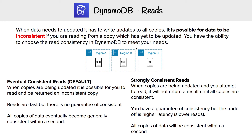Consistency is a very important concept when dealing with DynamoDB. When data is written to the database, it has to copy it to other regions. So if someone was reading from region C when an update was occurring, there's a chance that you're reading it before it has the opportunity to write it. DynamoDB gives us a couple of options based on our use case.